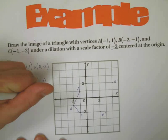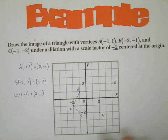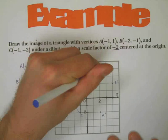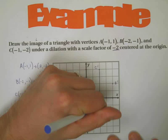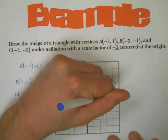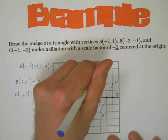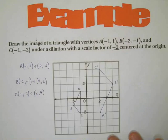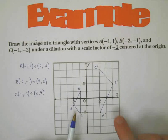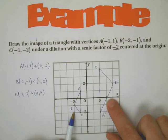And C which is at negative one, negative two is now going to be at positive two, positive four, which is right here. So of course the first example is going to be something that's negative. It would make sense for us to give you a straightforward example.